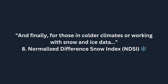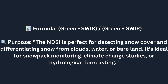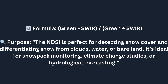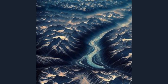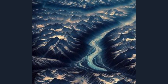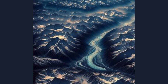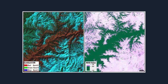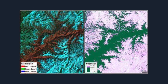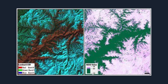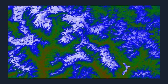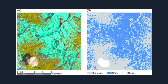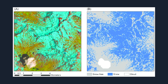Finally, for those in colder climates or working with snow and ice data, the eighth index is the Normalized Difference Snow Index, or NDSI. The formula is: NDSI = (Green − SWIR) / (Green + SWIR). The NDSI is perfect for detecting snow cover and differentiating snow from clouds, water, or bare land. It's ideal for snowpack monitoring, climate change studies, or hydrological forecasting. NDSI is crucial for tracking snow and ice cover in mountainous or polar regions, helping predict water availability and monitoring climate change impacts.